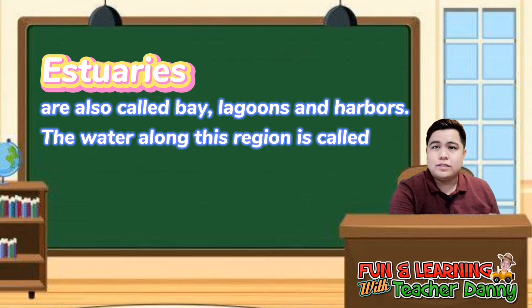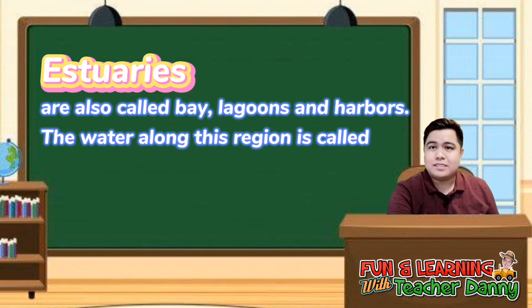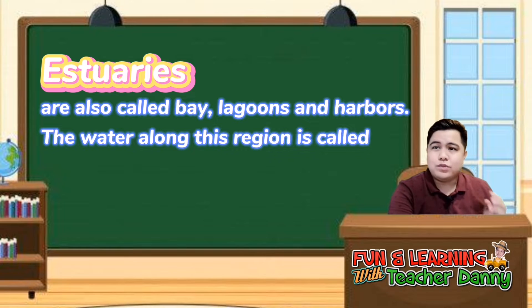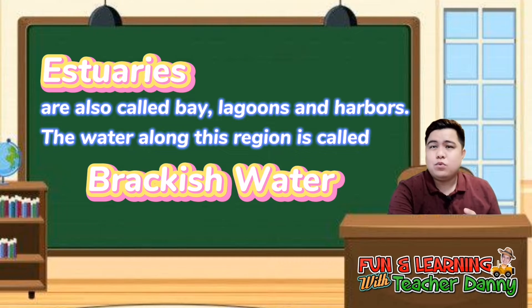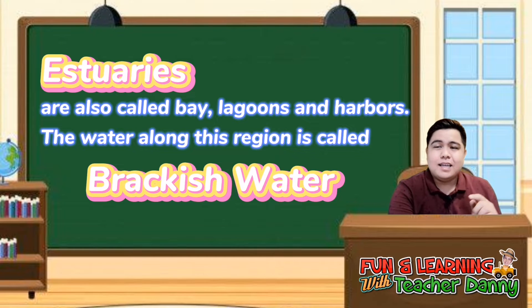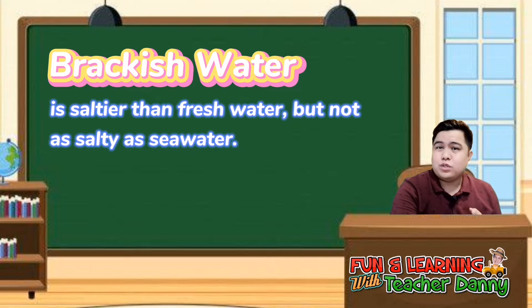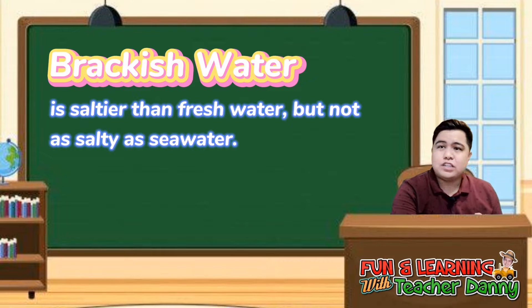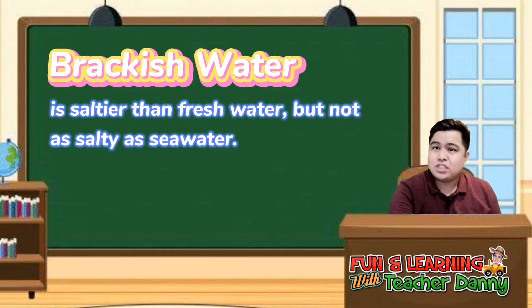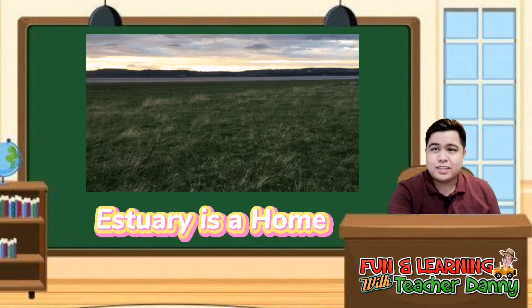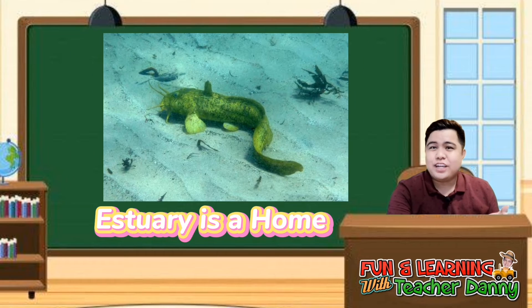Estuaries are also called bays, lagoons, and harbors. The water along this region is called brackish water, because the salty water from the sea enters this region by tide, while the fresh water is diluted — that is why the water here is neither completely salty nor completely fresh. The estuary is a home to many animals, such as fishes.